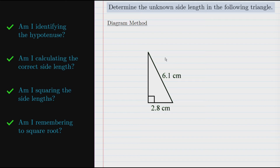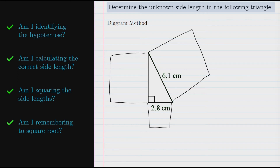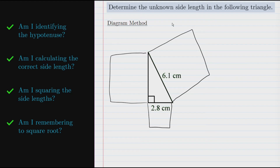It's really important to remember the side length we are calculating here is not the hypotenuse. Let's do what we normally do with the diagram method and draw squares on each side of our triangle. Drawing the squares should remind you that you need to find areas, because the Pythagorean theorem is really all about the areas of these squares — that's the third check: am I squaring the side lengths? This square has a side length of 6.1 centimeters, so 6.1 times 6.1 gives us an area of 37.21 cm². The bottom square has a side length of 2.8 centimeters, so 2.8 times 2.8 gives us an area of 7.84 cm².